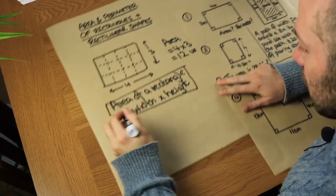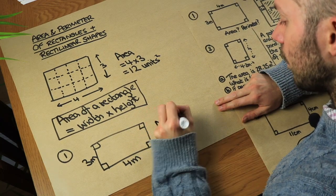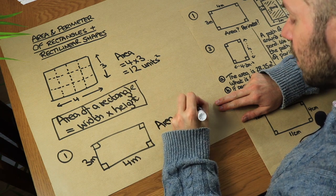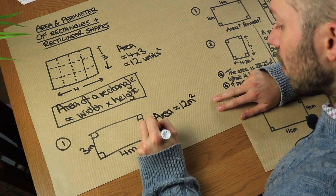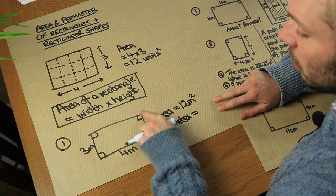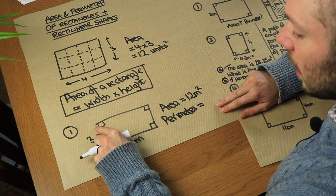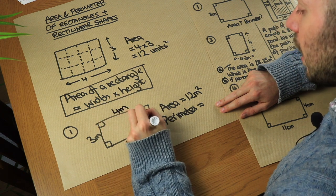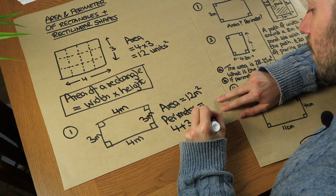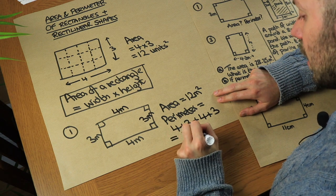So let's take this first rectangle — what would the area be and what would the perimeter be? The area is 12 meters squared because it's three times four. But the perimeter just means the total length around the shape — the total length of all the edges. We've got four here, three here, four here again, and three here, and if we add those all up — four plus three plus four plus three — the total perimeter is 14 meters.